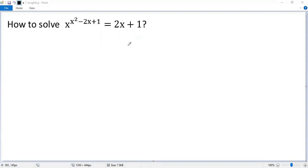Let's see how to solve the difficult exponential equation. First we notice that x cannot be zero because if x equals zero you see the left side becomes zero to the power of one which is zero but the right side one they are not equal.